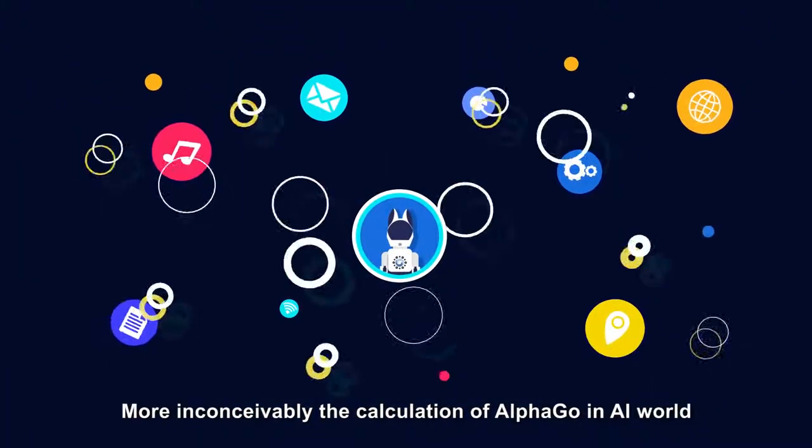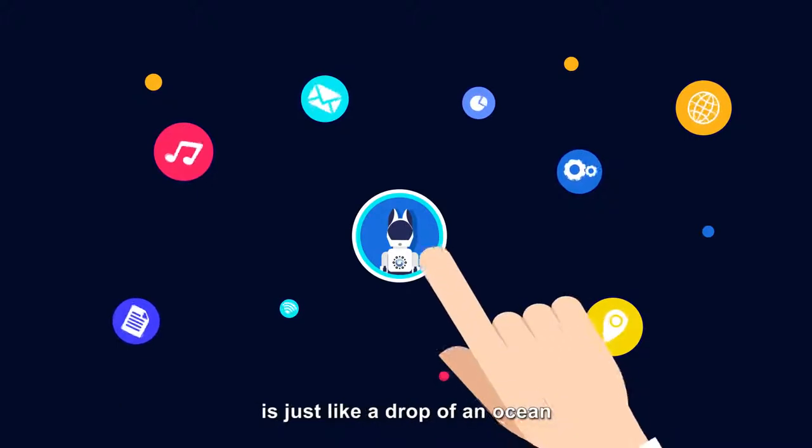More inconceivably, the calculation of AlphaGo in the AI world is just like a drop in an ocean.